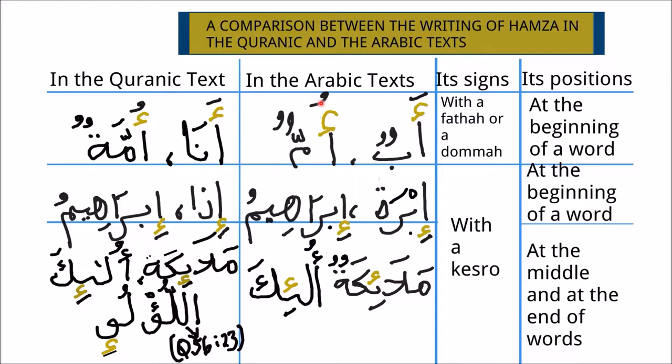Likewise, in the Quranic text, Ummun, which means a nation, has Hamza written upon an Alif, because the Hamza carries a Damma sign.